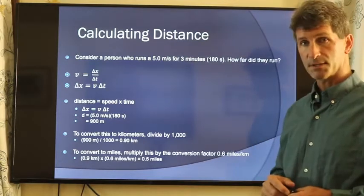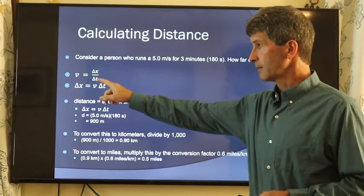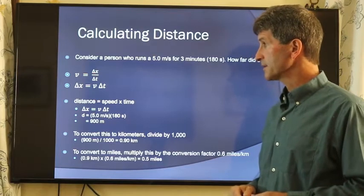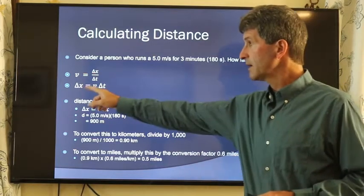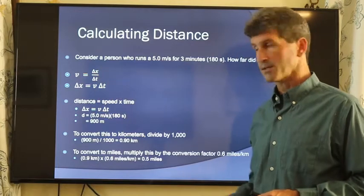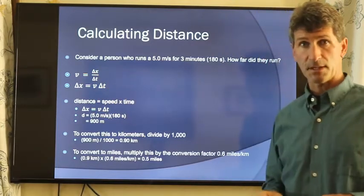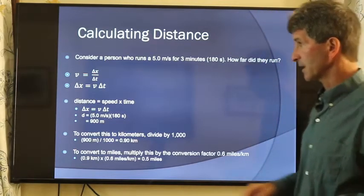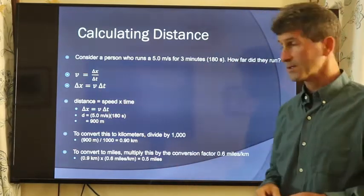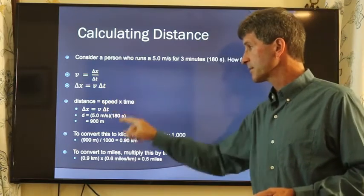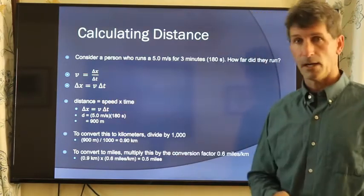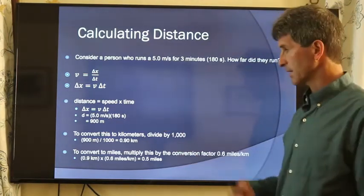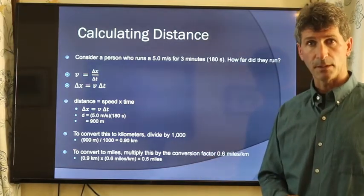What about if you want to calculate distance? V is equal to delta x over t. If we take the delta t and multiply it to both sides, we leave delta x by itself. We get that the distance is equal to the velocity times the change in time. If a person runs at a rate of 5 meters per second, and they do so for 180 seconds, 3 minutes, we multiply the two together, and we see that they go 900 meters.